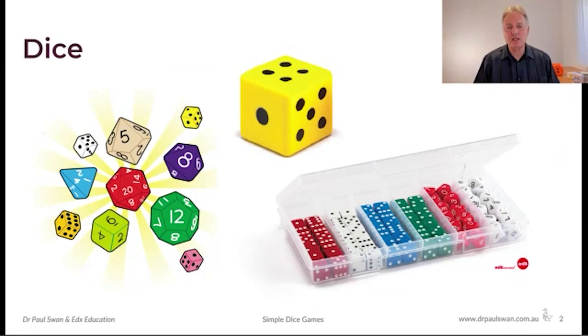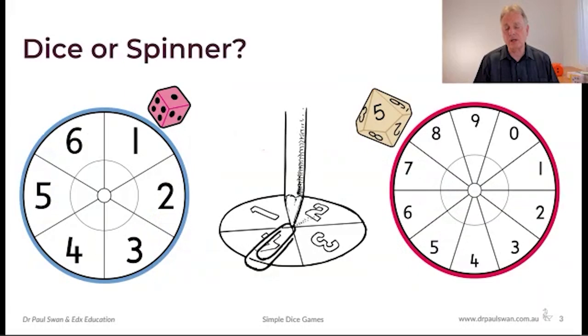If you're at home and don't have access to dice, you could use a paper clip and a spinner. All you're doing is generating numbers from one to six or zero to nine, so anything we do today - if you don't have dice, feel free to do that. Essentially anything you can do with a dice you can do with a spinner and vice versa quite often.